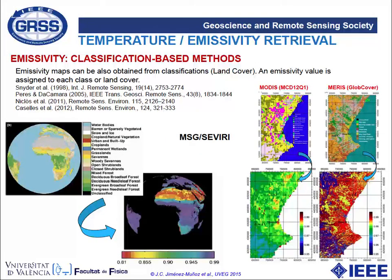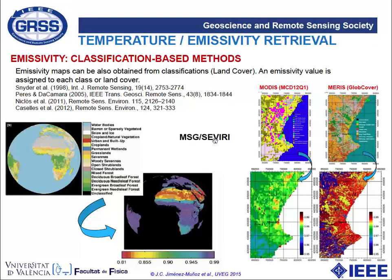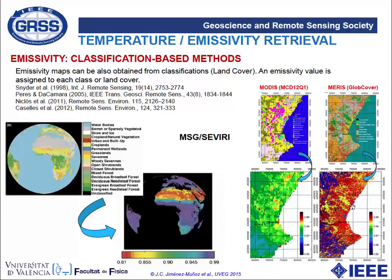Another approach to obtain an emissivity map is to use a land cover classification, assigning an emissivity value to each land cover class. Examples show that from a land cover map we can obtain the emissivity map — the higher the resolution of the land cover map, the higher the resolution of the final emissivity product.